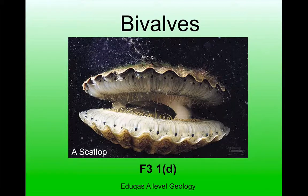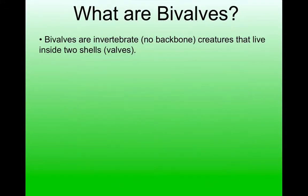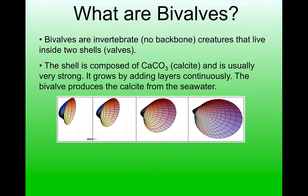This video is all about the features that we can see on bivalves — common fossils and ones that are frequently asked about in A-level geology exams because of the wealth of information we can find within them. Bivalves are invertebrate mollusks, animals that live inside two shells, or 'valves'. The shells are made of calcite and create a very strong protective container for the animal. It grows by adding extra material to the edge of its shell continuously, extracting calcite dissolved in seawater and secreting it to make its shell.